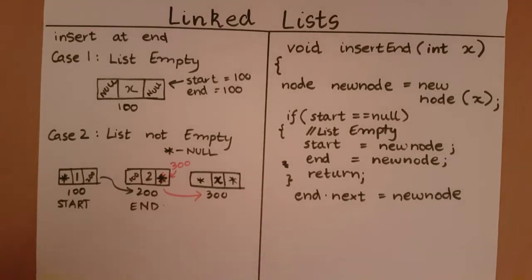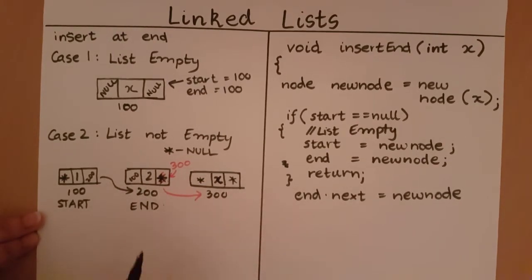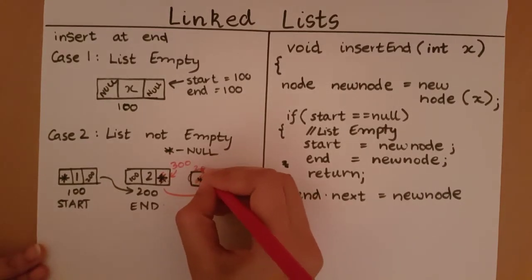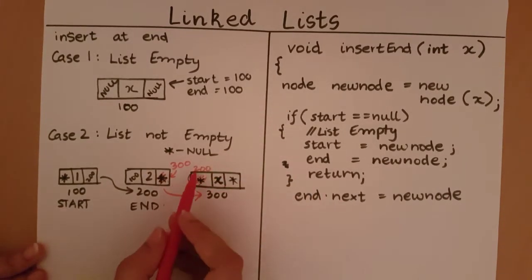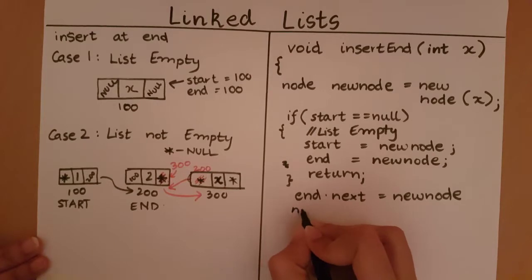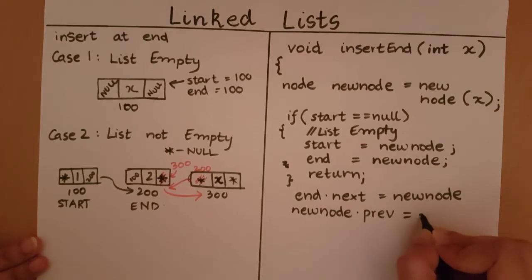The next change I must make is I must set the new node's previous to end, because I want this to be pointing to the previous element. So I'm going to remove null from here and I'm going to set this to 200. So what does this mean? This means that I'm getting the address of the previous node. So now I need to set new node dot previous is equal to end.